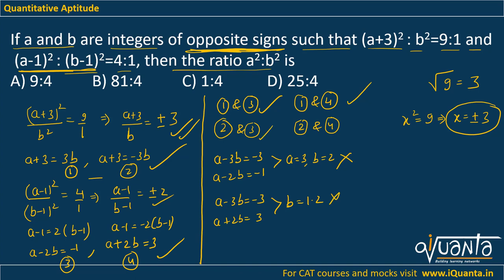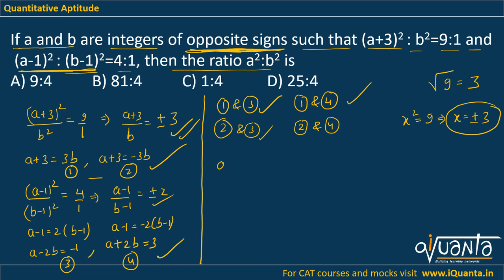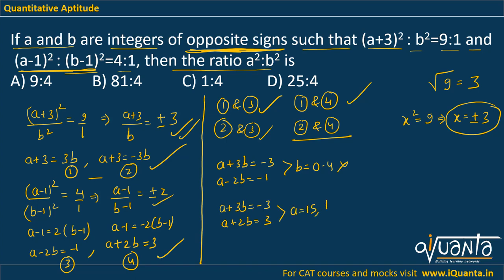Solving equations 2 and 3: a + 3b = -3 and a - 2b = -1 gives b = 0.4, not an integer — rejected. Finally, solving equations 2 and 4: a + 3b = -3 and a + 2b = 3 gives a = 15 and b = -6. These are integers of opposite signs, which is exactly the condition we need.